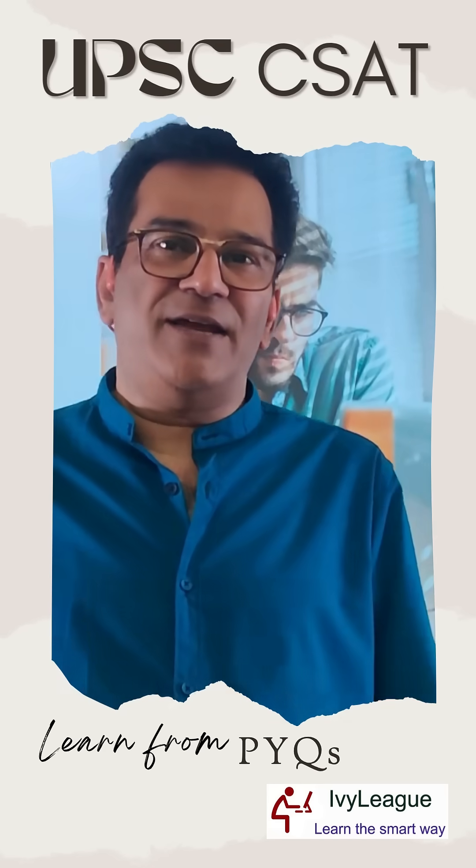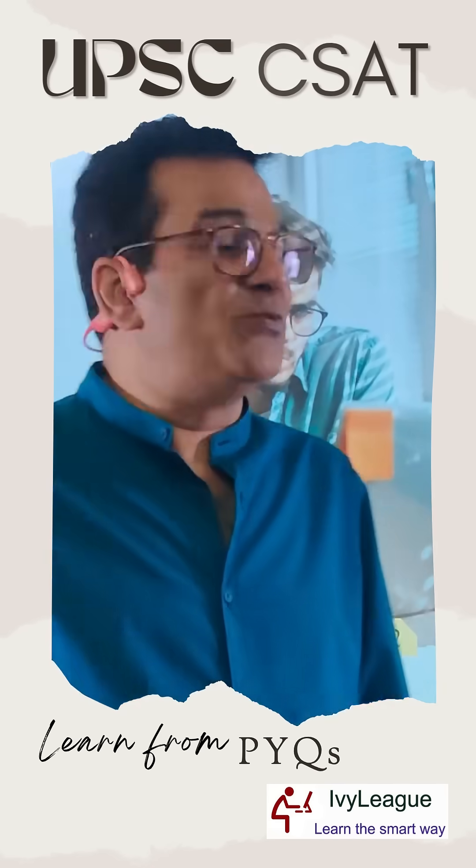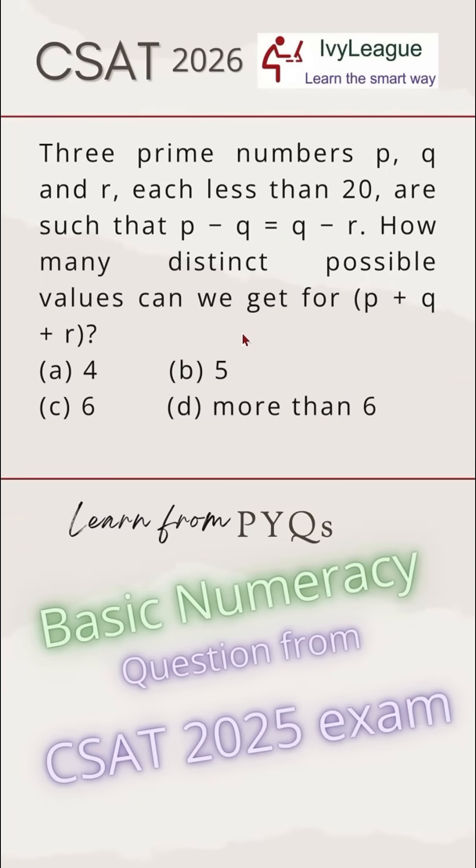Good morning, let's look at a previously asked question from basic numeracy. This is a question from CSAT 2025 examination. The question says three prime numbers p, q, and r, each less than 20, are such that p minus q is equal to q minus r. How many distinct possible values can we get for p plus q plus r?